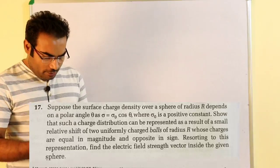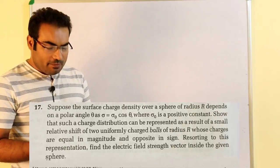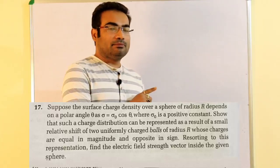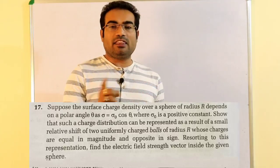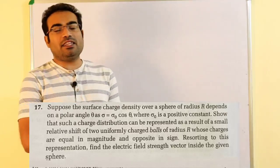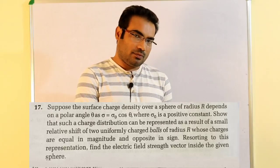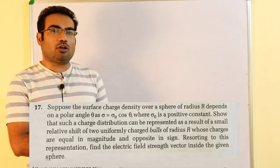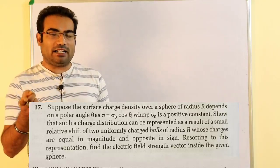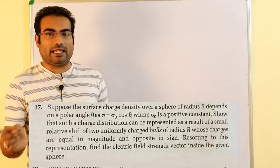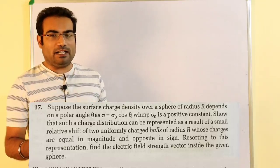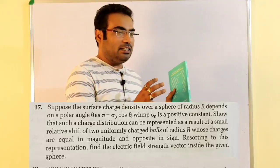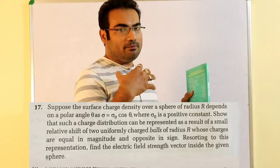In this question there are two points. One is that you have to prove that the surface charge density is sigma naught cos theta. And the second is that if sigma is sigma naught cos theta, then what will the electric field be? I will tell you the electric field first, and the proof I will tell you later.